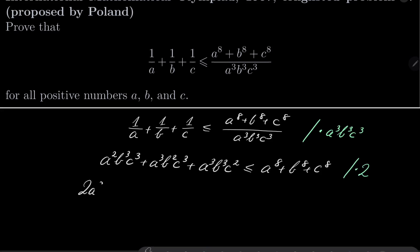So I have 2a²b³c³ + 2a³b²c³ + 2a³b³c² less than or equal this.